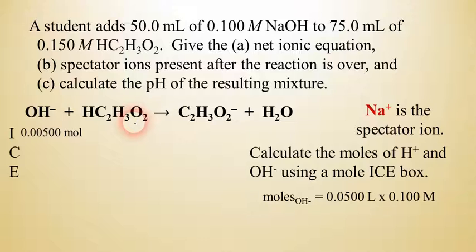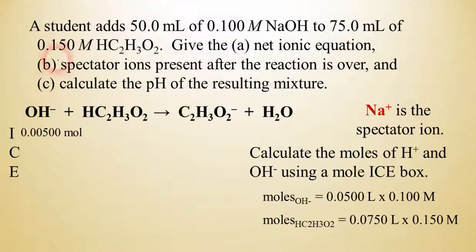To find the moles of acetic acid, we want to do something similar. We take the 0.150 molar and multiply it by 0.075 liters. And so that's what the work is shown down here for that. When you multiply that on your calculator, I believe you get an answer of about 0.01125 moles. We're not starting with any acetate ion, so I'll put a 0 there. And of course, like we learned in the last lesson, we're not really caring about how much water we're making, so we're just going to ignore that part of this.